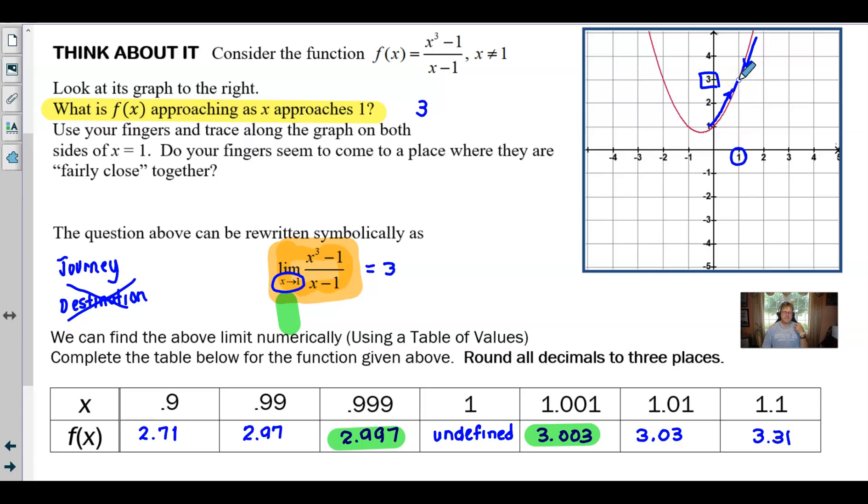Because sometimes that destination can never be reached, like in the case of this problem here. We're never, ever going to be physically at the point (1, 3). Because the point (1, 3), it doesn't exist on this graph, right?